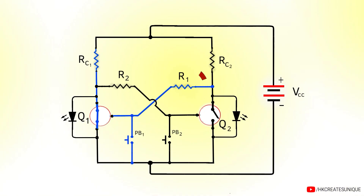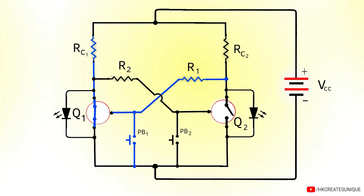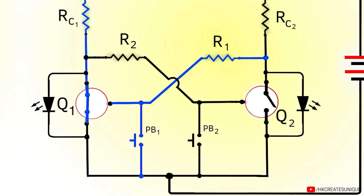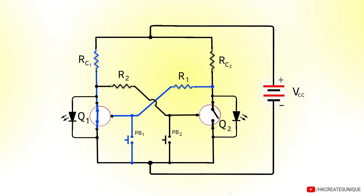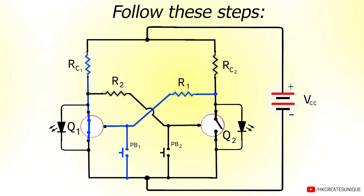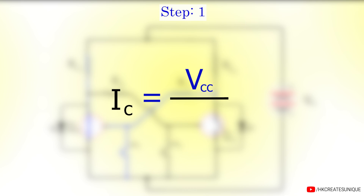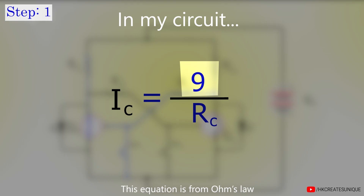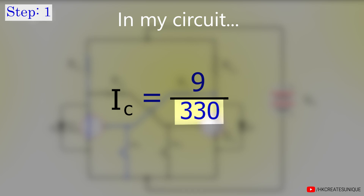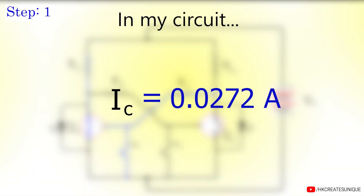The values of R1 and R2 should be such that they can strongly turn the transistors on. First, find the collector current when the transistor is on: IC = VCC divided by RC. Putting in the values of VCC and RC, we get a collector current of 0.0272 amperes, or 27.2 milliamps.